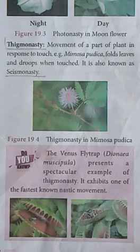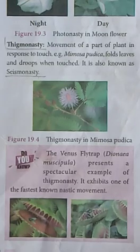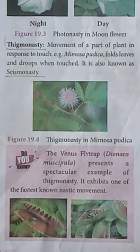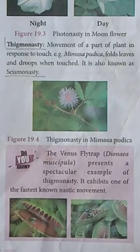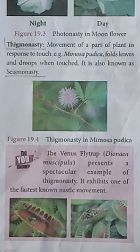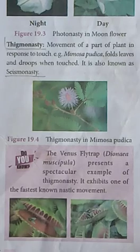Another example of thigmonasty is the Venus flytrap. The leaves will be modified and will close when triggered by touch.